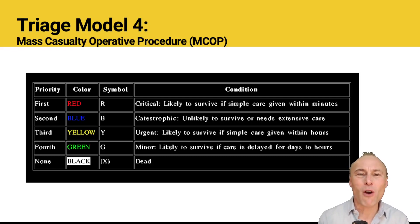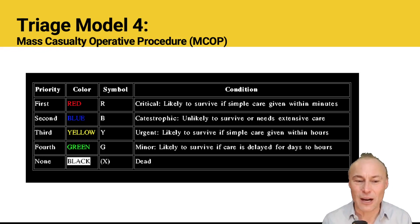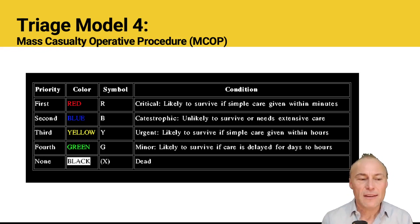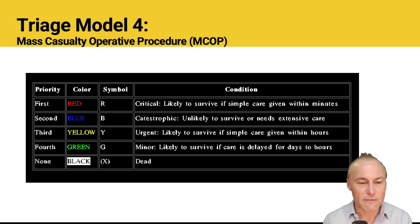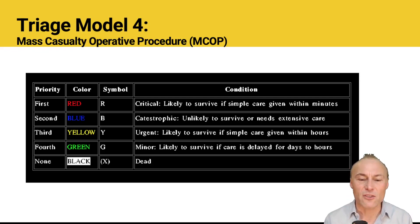To address the problem of what to do with catastrophic patients, the Mass Casualty Operative Procedure (MCOP) triage inserted a blue category between red and yellow. Blue patients are catastrophic and unlikely to survive or require extensive care. In this model: red (first priority) — critical patients likely to survive with simple care given within minutes; blue (second priority) — catastrophic patients who may survive with extensive care; yellow — likely to survive with time; green — minor patients who survive even if care is delayed; and black — reserved for patients who are absolutely dead with no vital signs.